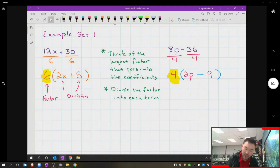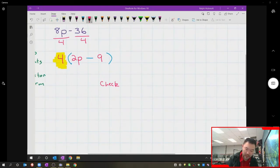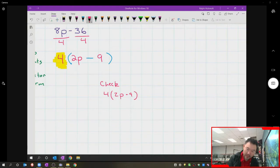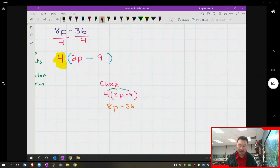There is a way to check that we are correct. You do not have to do this, but I'm going to put it in our notes so you can see. To check, I'm going to take 4 times (2p - 9) and check it by using the distribution property. I'm going to double rainbow it, and what you should notice is that it's 8p - 36. If you get the exact same expression as you started with, you did the factoring correctly.